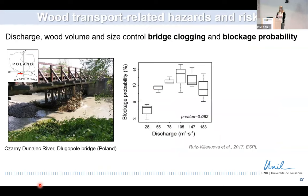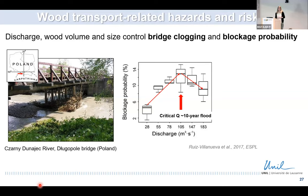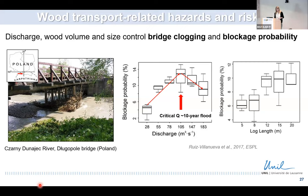Bridge clogging or blockage probability depends on many factors, and the model allowed us to explore them. One important factor is discharge. Running multiple scenarios for a river in Poland, we computed the blockage probability and observed that in general it increases with discharge — but only up to a certain threshold. For very extreme floods, the wood blockage may not be so relevant as the flood is huge anyway. But for intermediate floods, wood transport may significantly increase flooding. The amount and size of wood also matter, and we found a threshold related to wood size relative to the channel or bridge size.